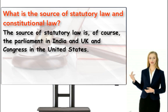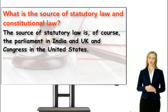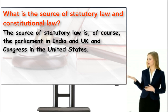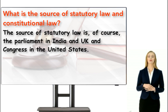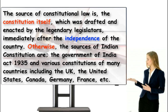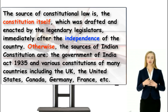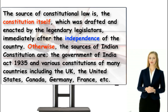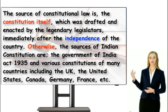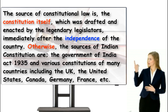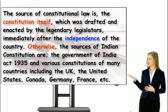The next question is: What is the source of statutory law and constitutional law? The source of statutory law is the parliament in India and UK, and Congress in the United States. The source of constitutional law is the constitution itself, which was drafted and enacted by legendary legislators immediately after independence. Otherwise, the sources of the Indian constitution are the Government of India Act 1935 and various constitutions of many countries including the UK, the United States, Canada, Germany, France, etc.